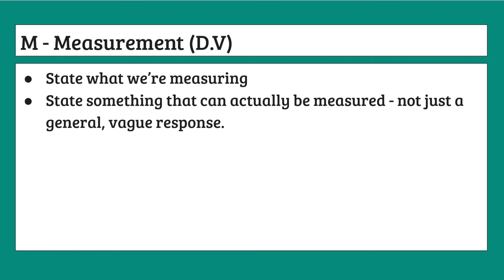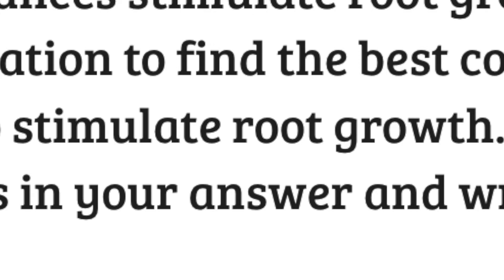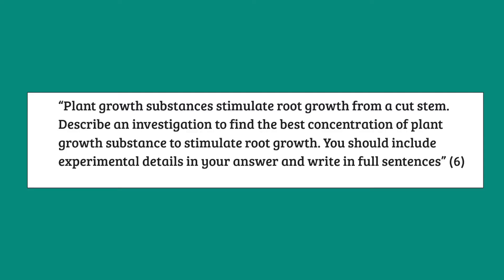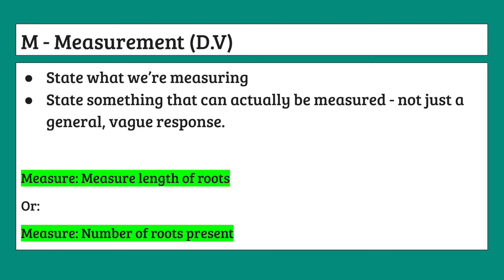Now for M, which stands for measurement. We have to state what we are measuring in the investigation — this is also known as the dependent variable. For our example, we are investigating the best concentration of plant hormone to stimulate root growth, so we need to measure root growth. But we can't just say 'measure root growth'; we need to give something with quantifiable units. A suitable measure may be the number of roots present, or the length of roots.